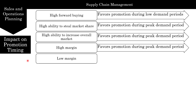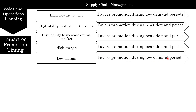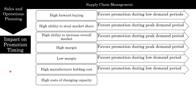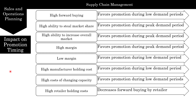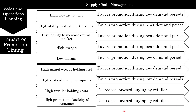If you have very tight margins — a small difference between cost of production and selling price — then it favors promotion during low demand periods. High manufacturer holding costs also favor promotion during low demand periods, as does high cost of changing capacity. If you have high retailer holding costs, this decreases forward buying by the retailer — they won't buy more because storing inventory is expensive. Finally, high promotion elasticity of the customer also decreases forward buying by the retailer.